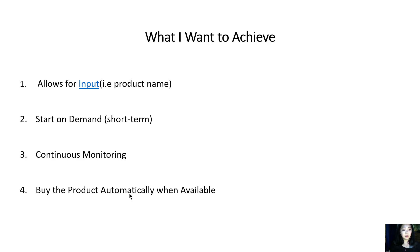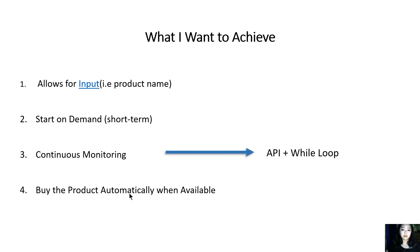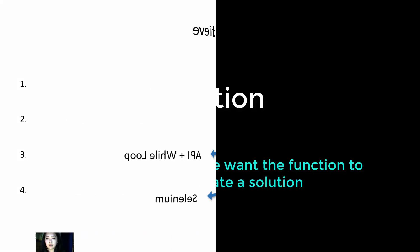So to create a plan: for continuous monitoring I probably need a while loop, and I need to check the API to see whether the item has become available. To automatically purchase the item I'm probably going to use Selenium. That's my really brief plan.